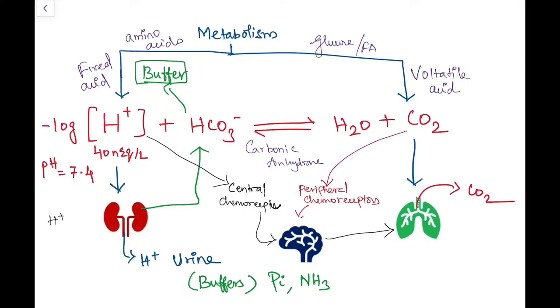Kidneys have multiple sensors for detecting the ECF concentration of hydrogen ions, bicarbonate and CO2 levels also. Different cells in kidney sense each of these molecules and they all regulate the hydrogen ion secretion and the bicarbonate reabsorption in the kidney.